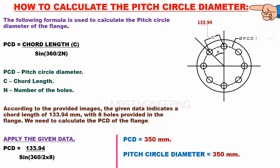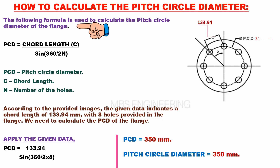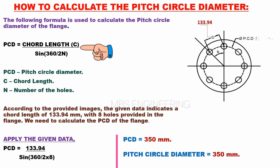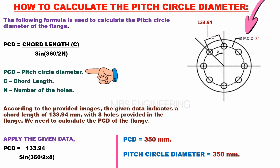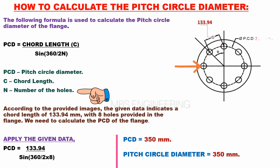We will learn how to calculate the pitch circle diameter of the flange. The following formula is used: the PCD or pitch circle diameter equals the chord length C of the flange divided by sine of 360 divided by 2 into N. PCD is the pitch circle diameter of the flange, and N is the number of holes in the flange.